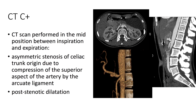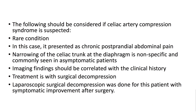Looking at the CT with contrast, taken in the mid position between inspiration and expiration, we note asymmetric stenosis of the celiac trunk due to compression of the superior aspect of the artery by the arcuate ligament. There is also post-stenotic dilatation.